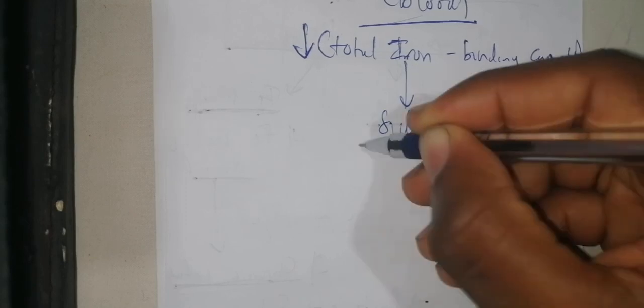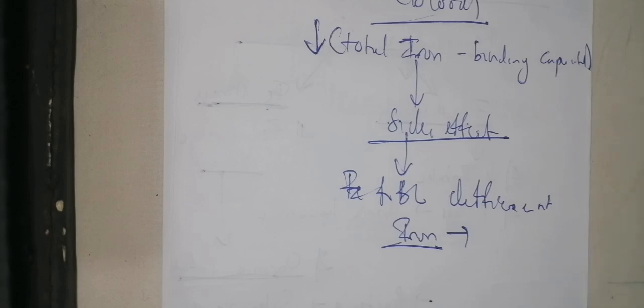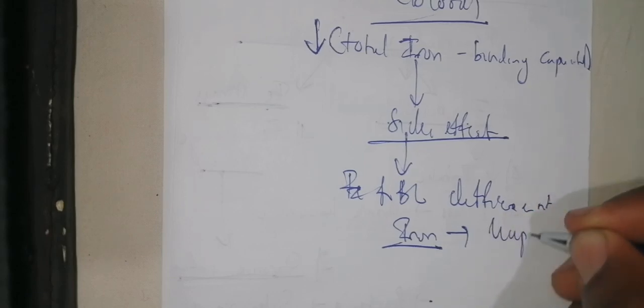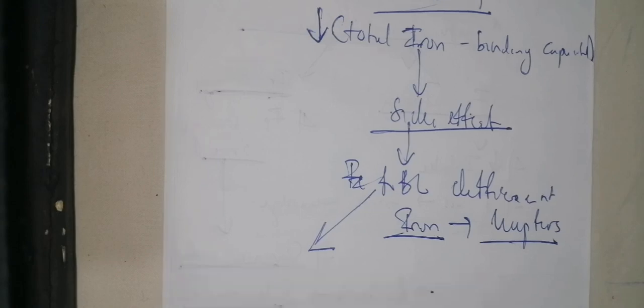Since the total iron binding capacity is low — meaning iron in blood is low — the bacteria can no longer use that iron for proliferation and will regress. However, a side effect is that the bone marrow will not have enough iron for red blood cell production. The bone marrow therefore produces red blood cells that are deficient in iron, because iron is stored by the reticuloendothelial cells, including the Kupffer cells.